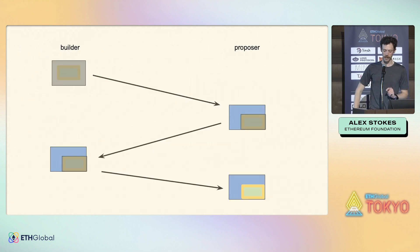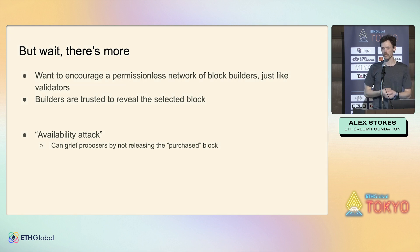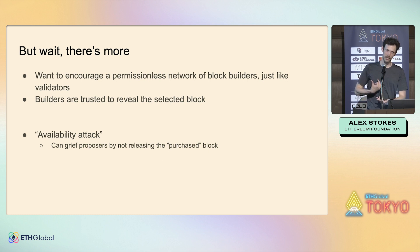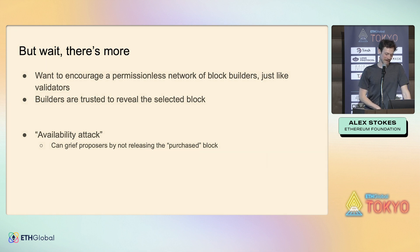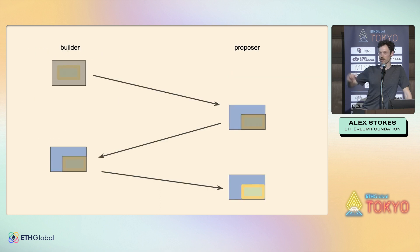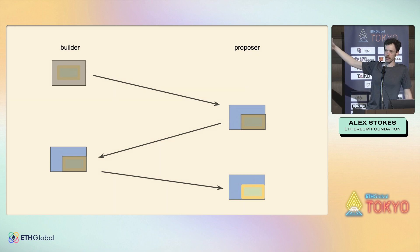But this last step — where the builder has to reveal the block — introduces another problem. We've addressed the first issue but now have another: builders are trusted to reveal the block, and if they don't, they could grief proposers. This is a common theme with PBS: you patch one hole and there's another hole somewhere else. I call this the availability attack — I can have you sign a commitment but then just not give you the full block. If I don't give you the full block, there's nothing for you to propose, and you've lost your chance to propose a block.